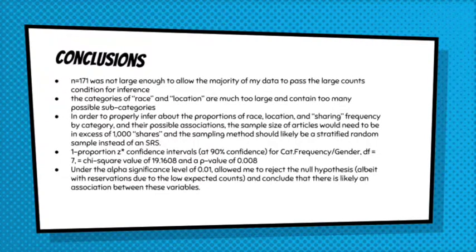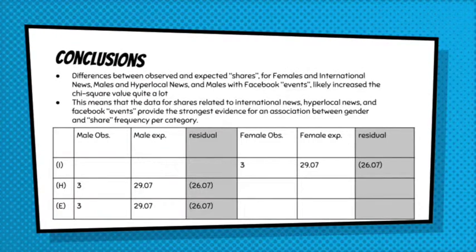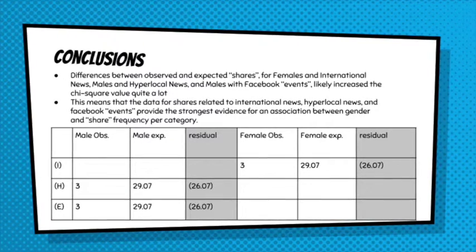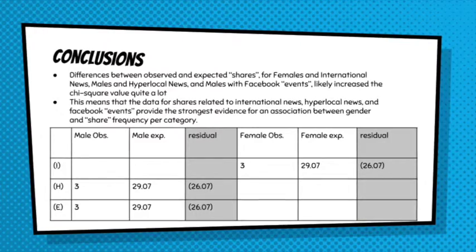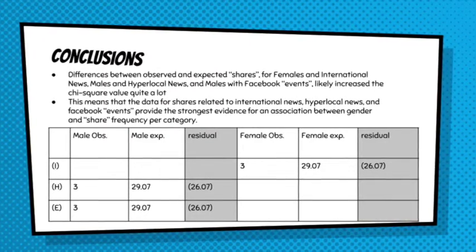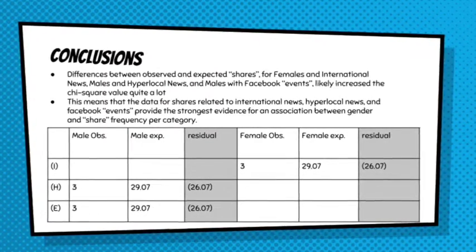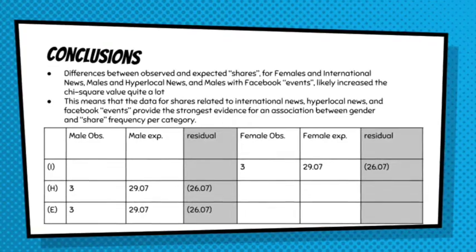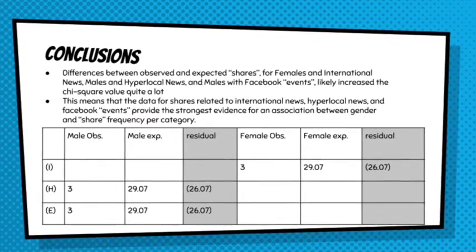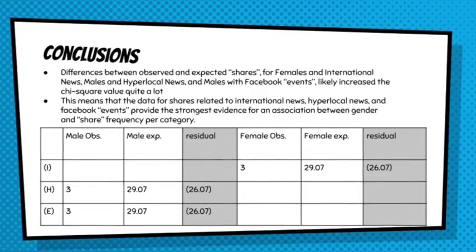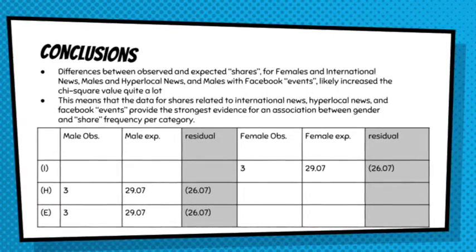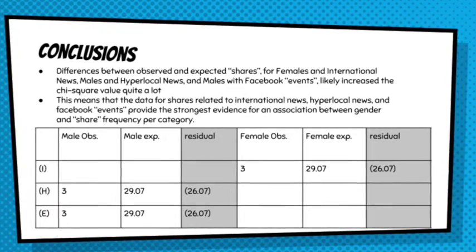You would also need a way, way stronger program than Google Sheets, which is what I was using — because although it's useful, it definitely cannot cope with that amount of data. My one-proportion confidence intervals at 90% confidence for frequency and gender resulted in p-values that I used for the chi-square, where I got a value of 19.16 and a p-value of 0.08. My alpha significance level was pretty low because of the low counts in the large counts condition, but it still allowed me to reject the null hypothesis. However, I have very large reservations about my data because of the very small sample size, and I would defer to any experiment that followed this with a much larger sample size.